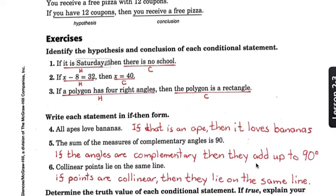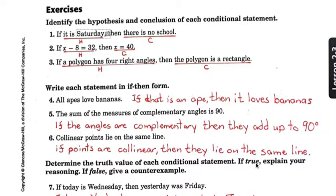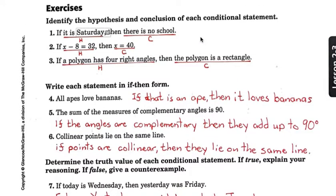All right, so we've got some examples here. Sorry about the slanted page here, didn't take the picture too well. Identify the hypothesis and conclusion of each conditional statement. If it is Saturday, then there is no school. So it is Saturday is the hypothesis, I have no idea what that thing is right there, and the conclusion is there is no school.